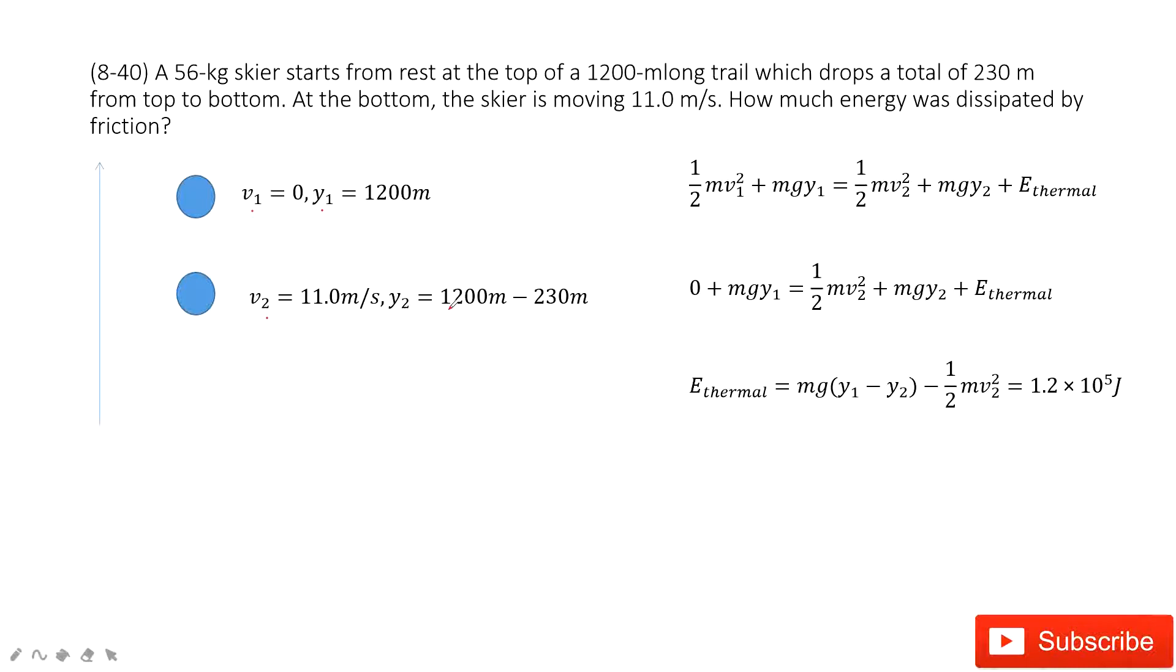Position is just this one, right? 1200 meters minus 230 meters. Why? Because it tells you at initial this position is at the top of the 1200 meters, then it drops 230 meters. So the position for y2 is just 1200 meters minus 230 meters. Agree? Yes.